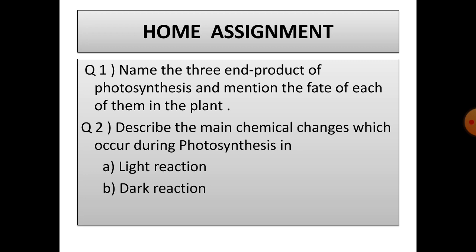Now is the time for home assignment. First question: Name the three end products of photosynthesis and mention the fate of each of them in the plant. Number two: Describe the main chemical changes which occur during photosynthesis in light reaction and dark reaction. I think all of you understood till here. You will be writing these home assignments in your leftover pages of old assignment copy. We will be discussing experiments on photosynthesis in our next video. Thank you.